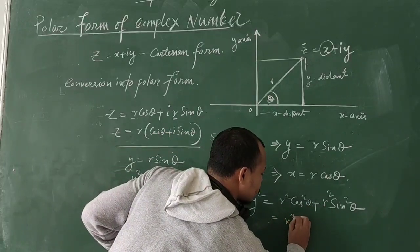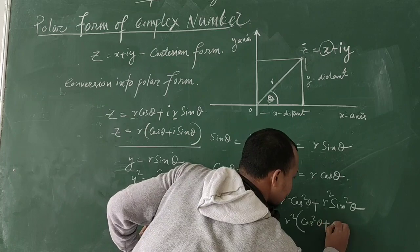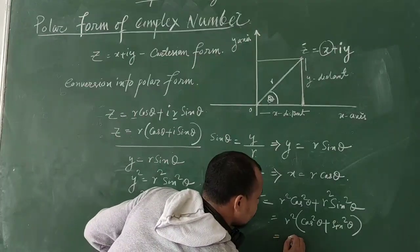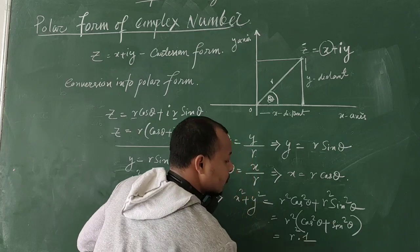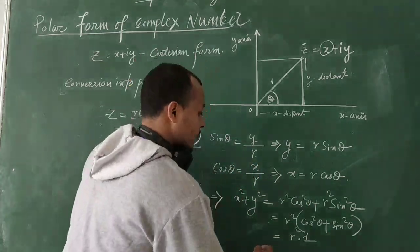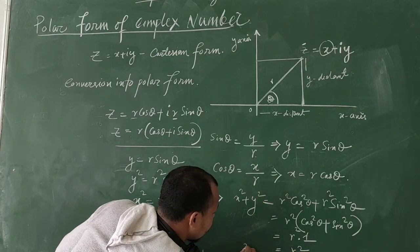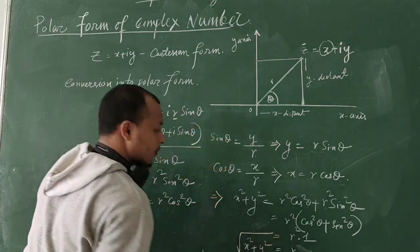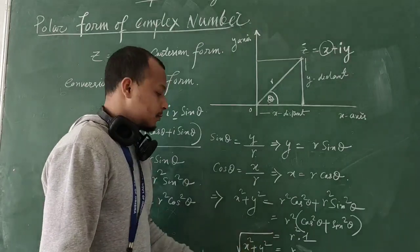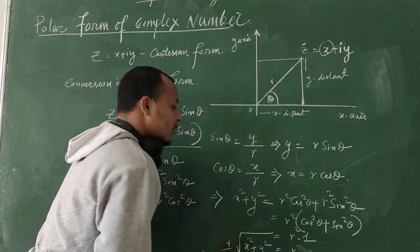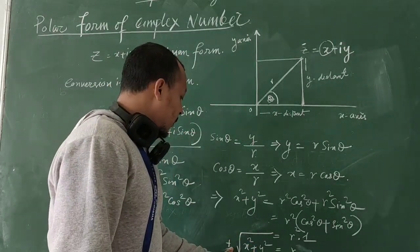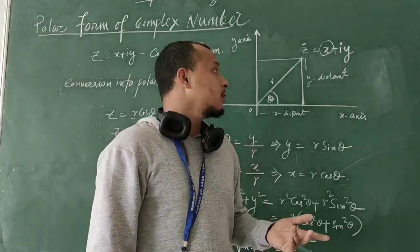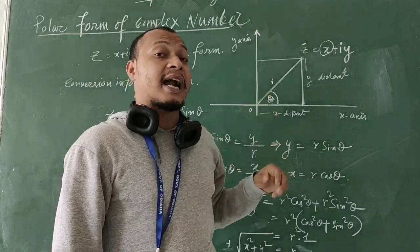Taking R² common: X² + Y² = R²(sin²θ + cos²θ). From trigonometry, sin²θ + cos²θ = 1, so X² + Y² = R². Therefore R = √(X² + Y²). Since distance is always positive, we take the positive root.